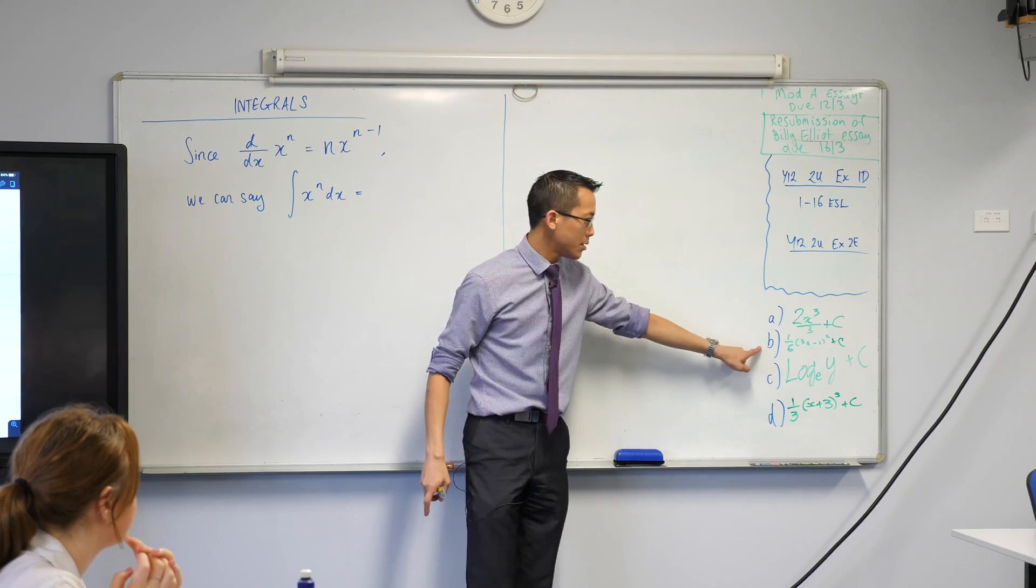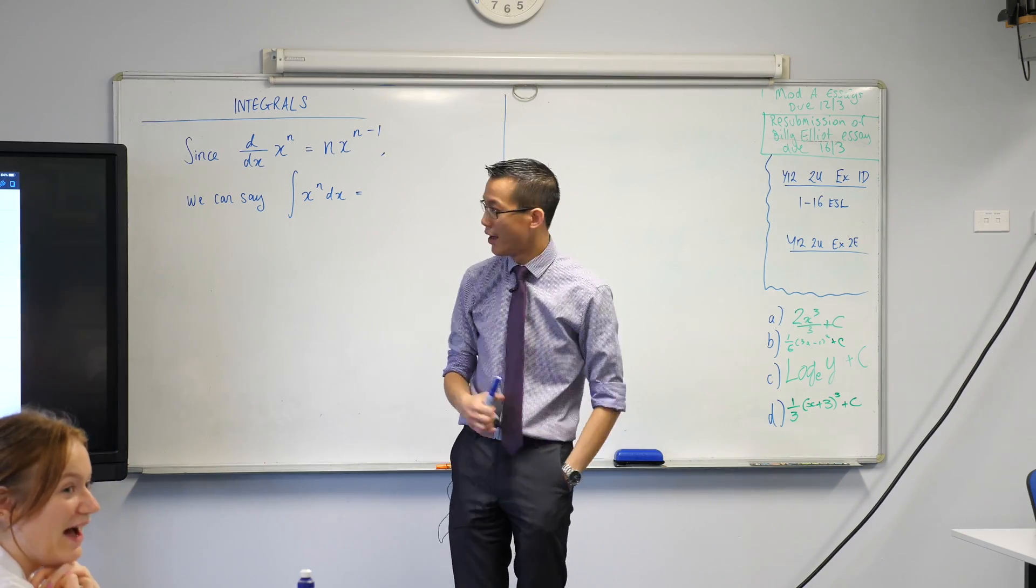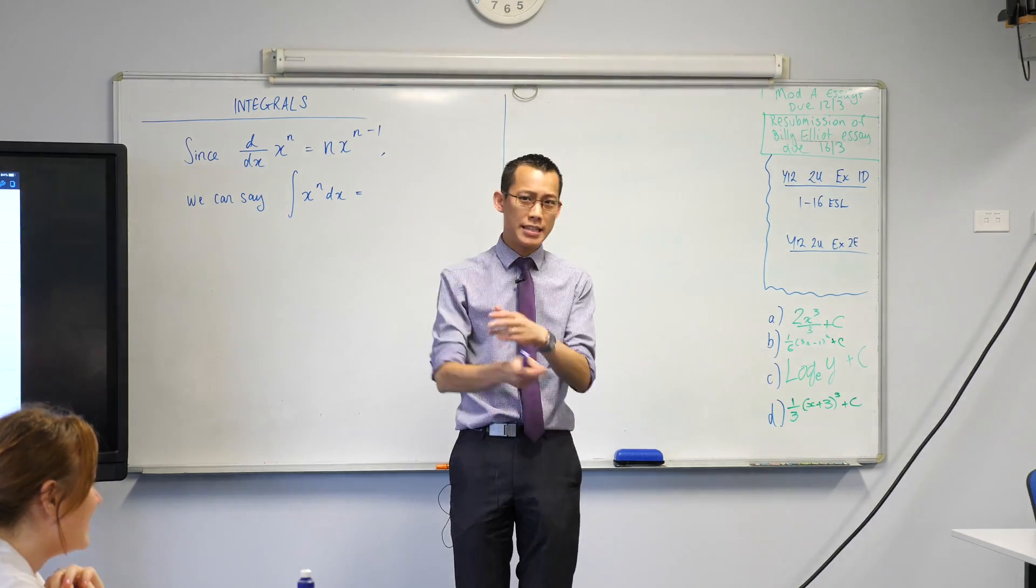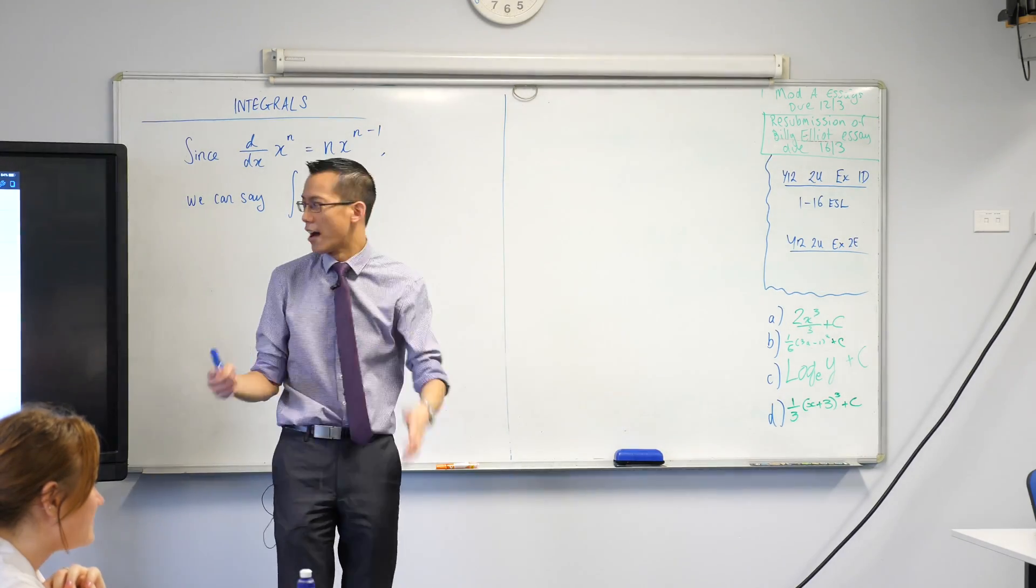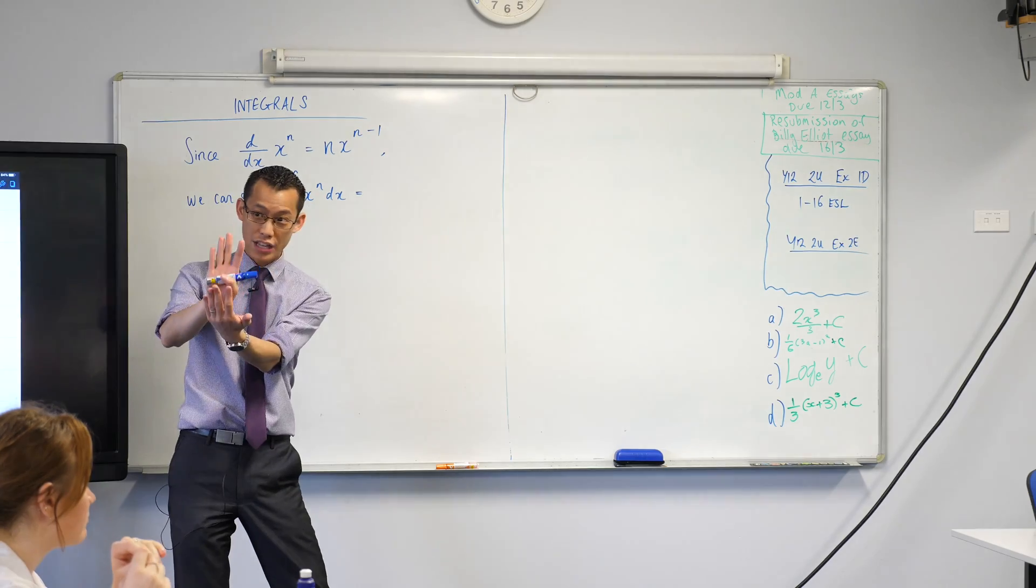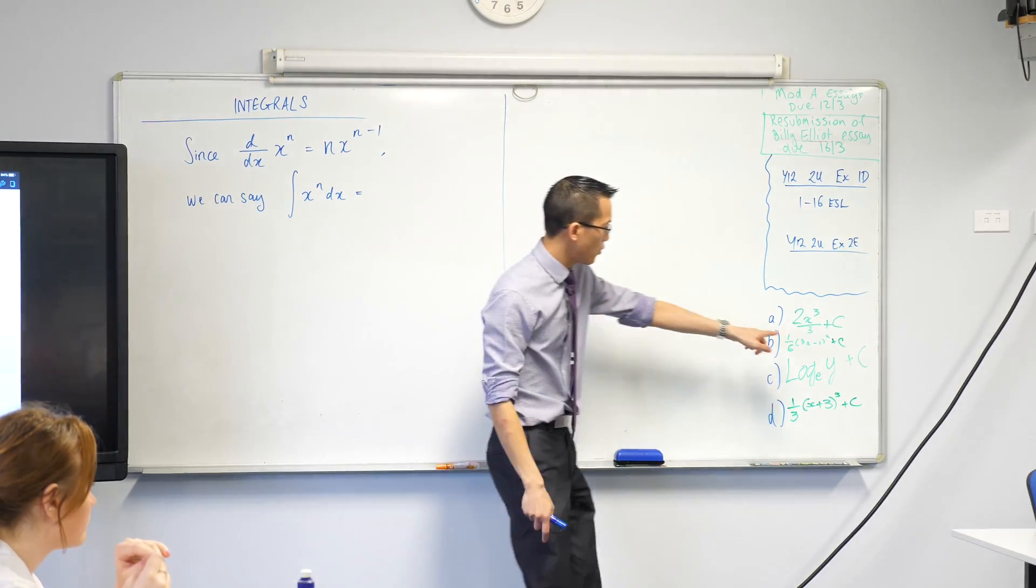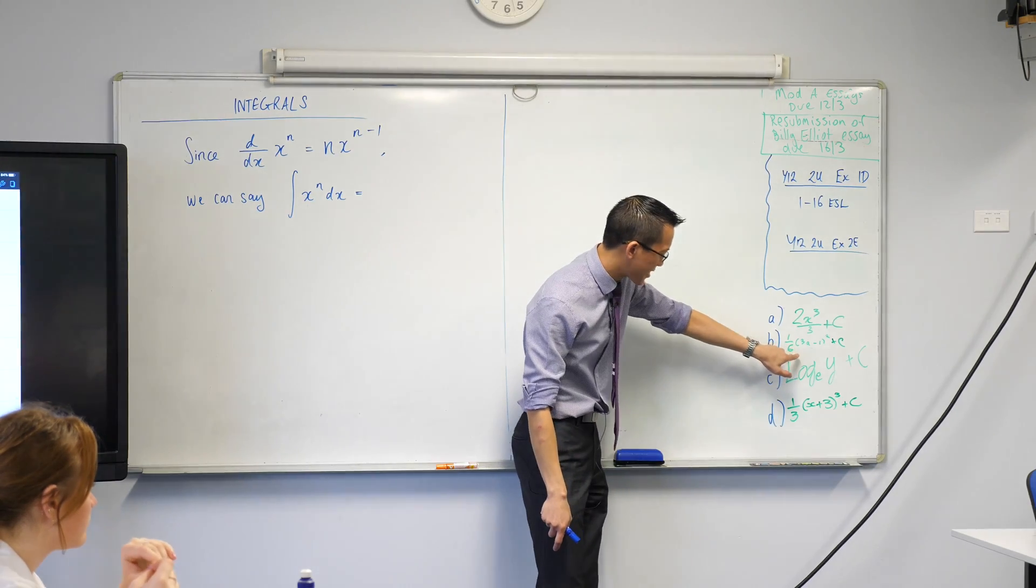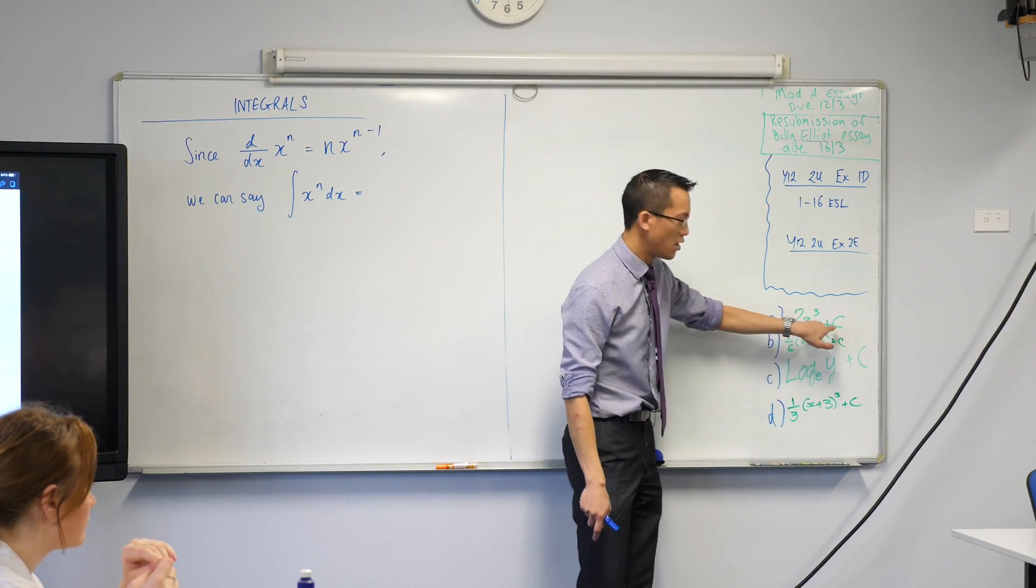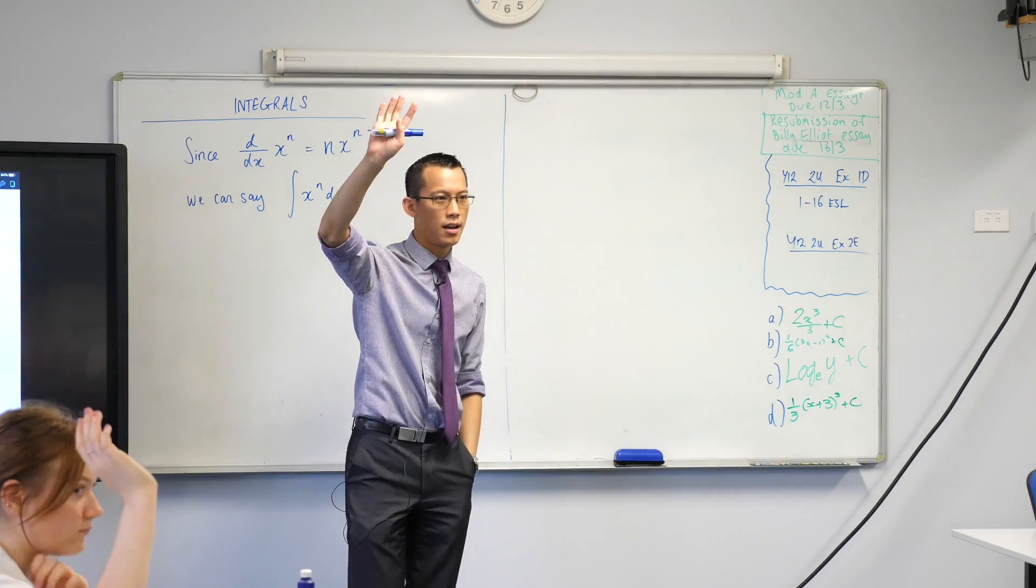Part b. Now this was a bit sneaky, because I threw a different pronumeral at you. I threw you an a instead of an x. But we've been dealing with functions for like years now. They don't have to have x's in them. They can have any letter we like. They just stand there as a pronumeral to put in place of some numbers. So when we have a look at this, 1 sixth outside of the 3a minus 1 squared, who wrote their answer exactly like that? Hands up. Two?